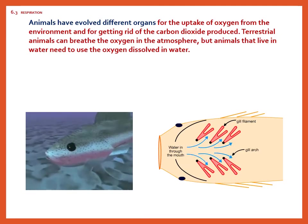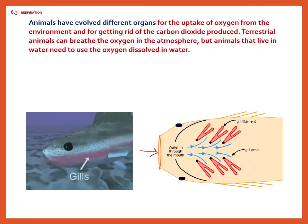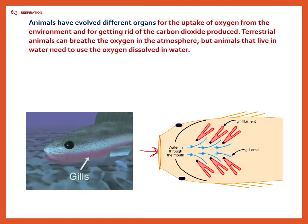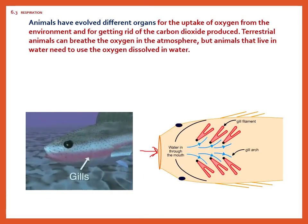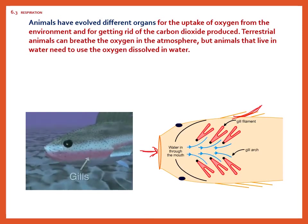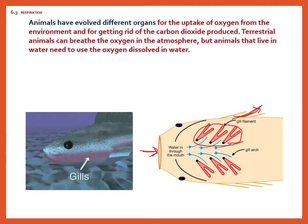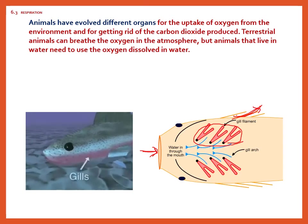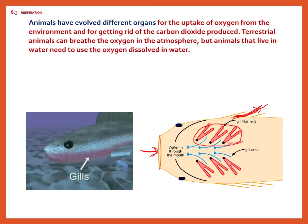In fish, water enters through the mouth and passes through a special organ called gills. In the gills, the water is processed — there are gill filaments where oxygen is absorbed from the water, and then the extra water goes out. So that is the process of respiration in fish and other water animals.